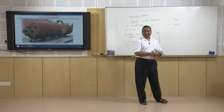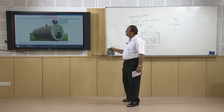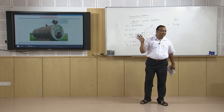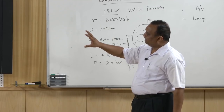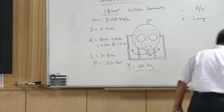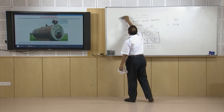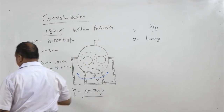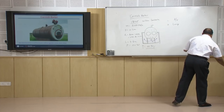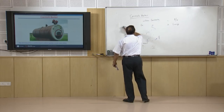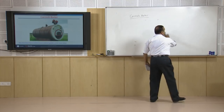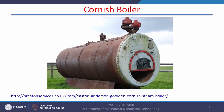A smaller version of this type of arrangement is another boiler known as the Cornish boiler. The Cornish boiler arrangement is more or less the same, but in this boiler there is only one fire tube. The Cornish boiler is older than the Lancashire boiler — it was first fabricated in the year 1812 by Richard Trevithick, making it more than 200 years old. Smaller version of the Lancashire boiler is the Cornish boiler.